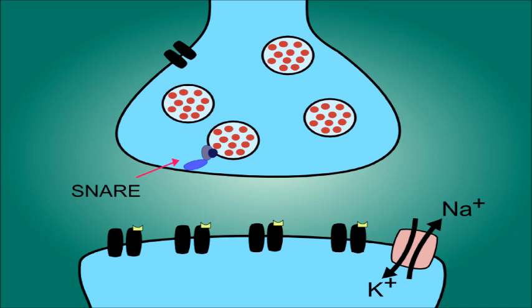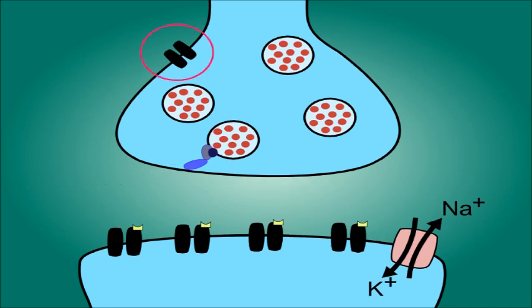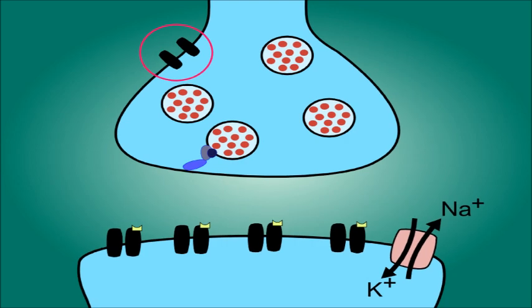When the axon terminal of the presynaptic neuron receives an electrical signal from an action potential, it causes calcium channels to open, letting in positive ions.